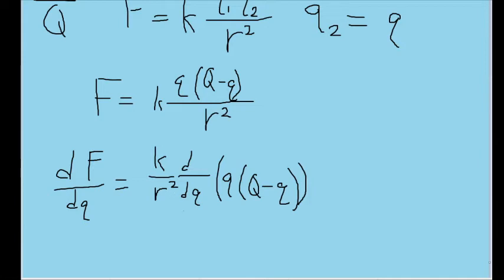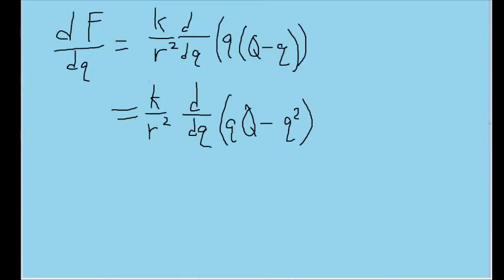So we can write those variables to the left of the derivative, since we're not going to be differentiating with respect to constants. Let's also simplify this function a bit by distributing small q over the parentheses. And we now have something that we can more easily differentiate.